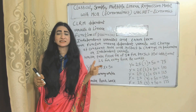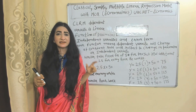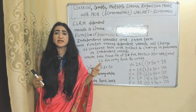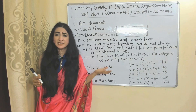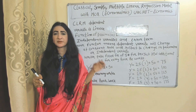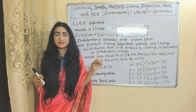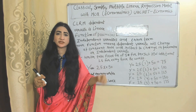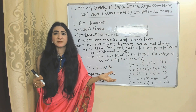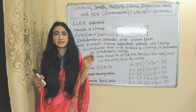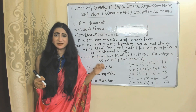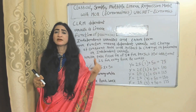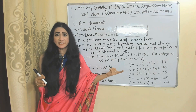Under the classical linear regression model, the dependent variable is a linear function of parameters, the independent variable, and the error term. Linear function means the dependent variable will change at a constant rate with respect to change in the independent variable or parameter.